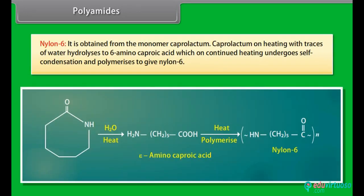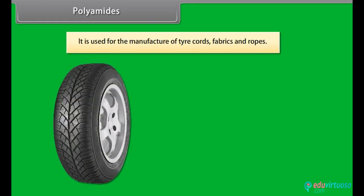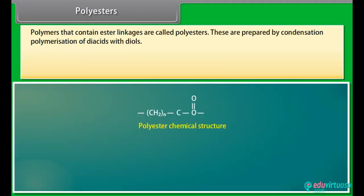Nylon 6: it is obtained from the monomer caprolactam. Caprolactam on heating with traces of water hydrolyzes to 6-aminocaproic acid, which on continued heating undergoes self-condensation and polymerizes to give nylon 6. It is used for the manufacture of tire cords, fabrics and ropes. Polyesters: polymers that contain ester linkages are called polyesters.